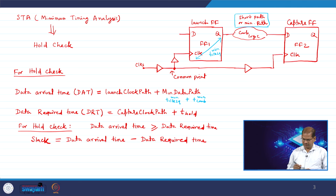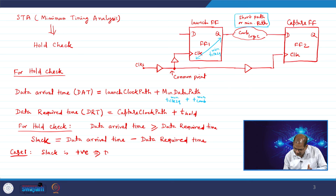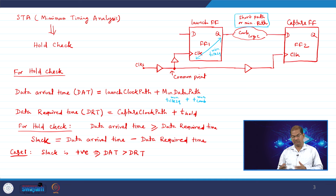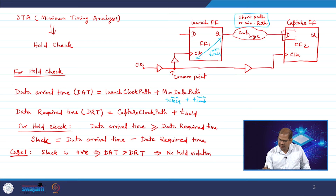There are two cases for slack. Case 1: slack is positive, meaning data arrival time is greater than data required time — data is arriving late compared to your clock edge — so there is no hold violation. Case 2: slack is negative, meaning data arrival time is less than data required time, implying the old data is sampled by new data in the same clock edge — you have a hold violation.